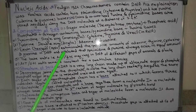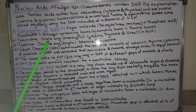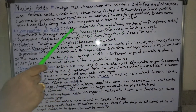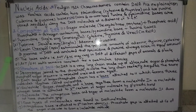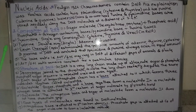The pyrimidine bases are single-ring (monocyclic) structures. The pyrimidine bases in DNA are cytosine and thymine; uracil is found only in RNA. The purine bases are double-ring (bicyclic) structures - adenine and guanine. Both adenine and guanine are found in both DNA and RNA.